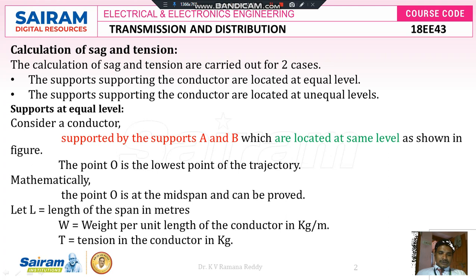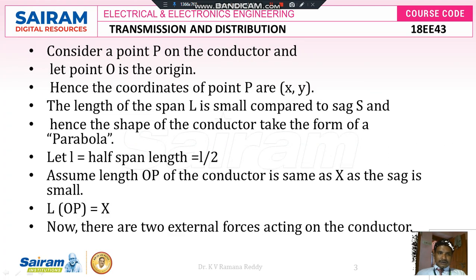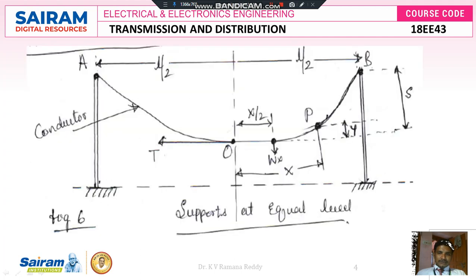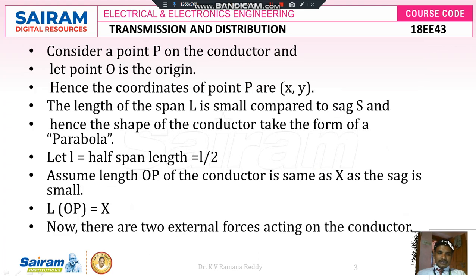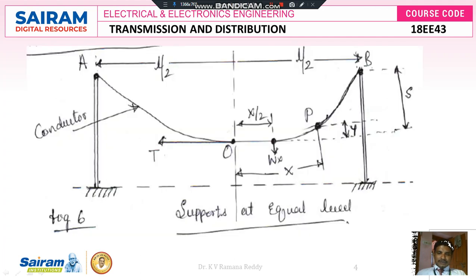W is equal to weight per unit length of the conductor in kg per meter, and T is equal to tension in the conductor in kg. Let us consider point P on the conductor and let point O be the origin. O is the origin for the entire conductor stretched between towers A and B.